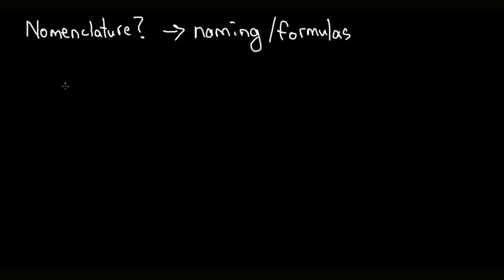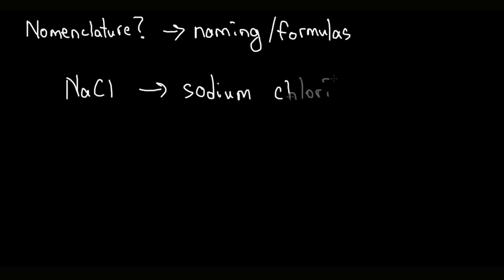Nomenclature is simply naming from formulas or making formulas from names of inorganic compounds. For example, if we have NaCl, the name of this is going to be sodium chloride. So that is the nomenclature. Later on we are going to have a lecture on organic nomenclature, which is completely different from what we're doing today.